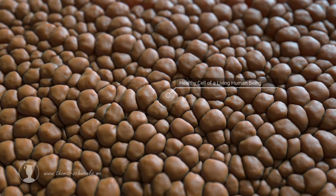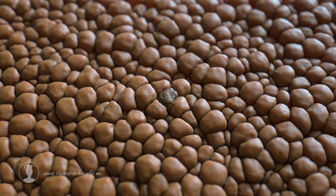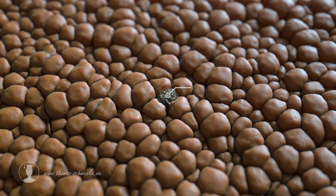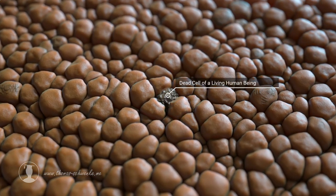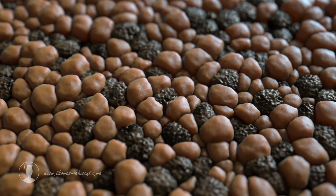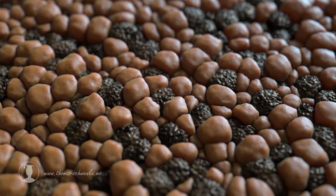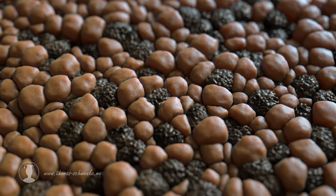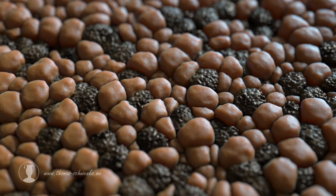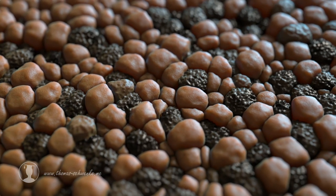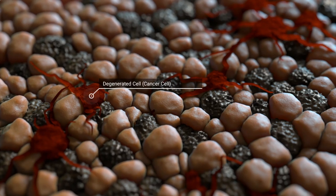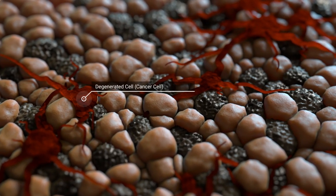If the cell cannot repair these double strand breaks, it initiates apoptosis and dies. If this happens too often, the entire organism is at risk of death. If the cell does not die, it can become a cancer cell. It then no longer performs the tasks characteristic of its type. We say, it degenerates.